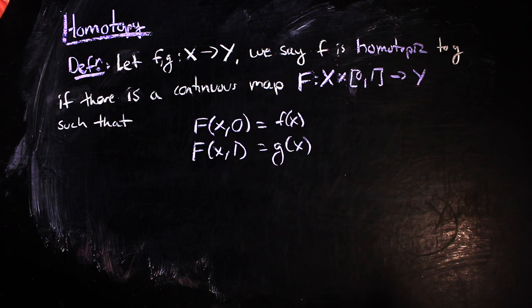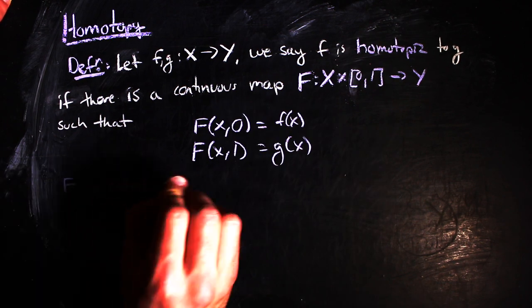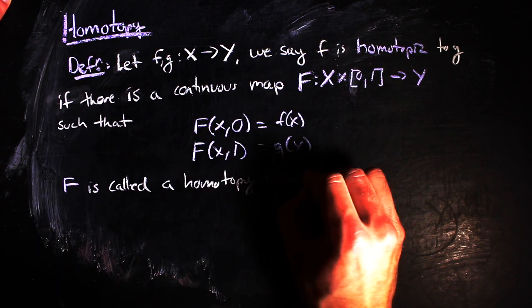such that big F of x, 0, is equal to little f of x, and big F of x, 1, is equal to g of x. This big F is called the homotopy between f and g.